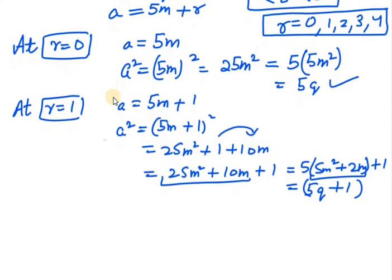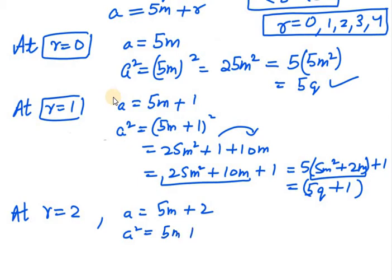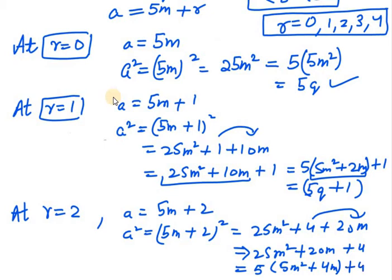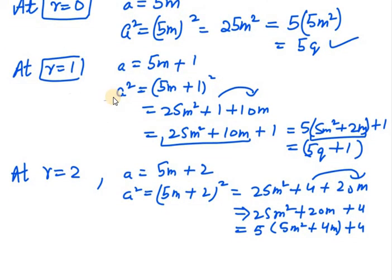At r equals 2, a becomes 5m plus 2. Squaring both sides: a squared equals (5m plus 2) squared equals 25m squared plus 20m plus 4. Taking 5 common from the first two terms gives 5(5m squared plus 4m) plus 4. Whatever is in the bracket can be written as q. So it will be in the form of 5q plus 4.